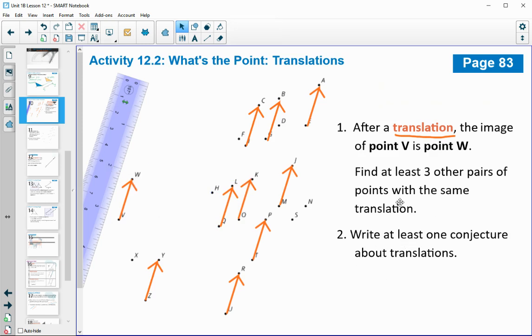So then write a conjecture about what you're seeing. Remember a conjecture is just a guess about what you're seeing. So take a second, pause the video, write down at least one conjecture.